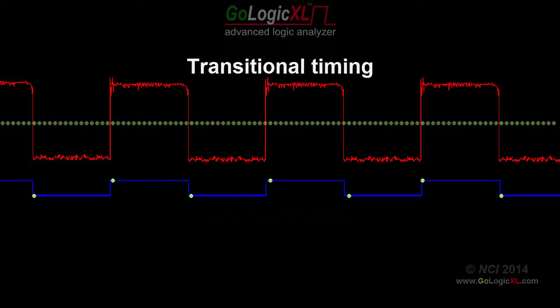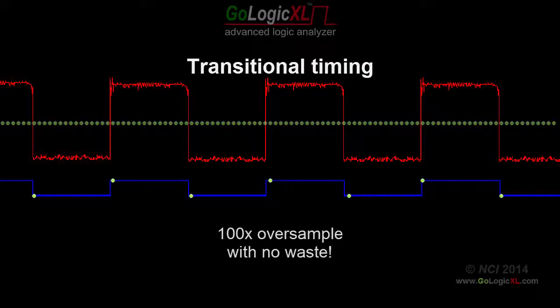So the GoLogic XL provides transitional timing mode, which ignores samples where the data remains the same as the previous sample. This means you can oversample the input signals by a factor of 20 times to 100 times with no wasted samples in the captured trace data.